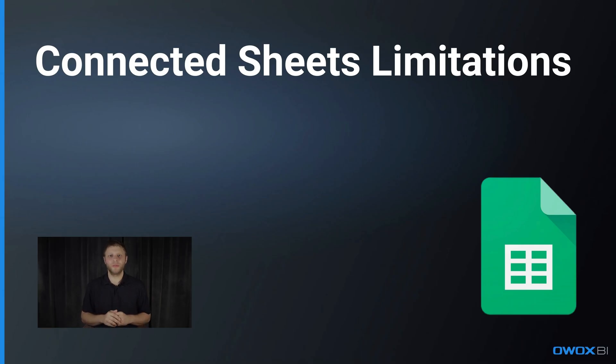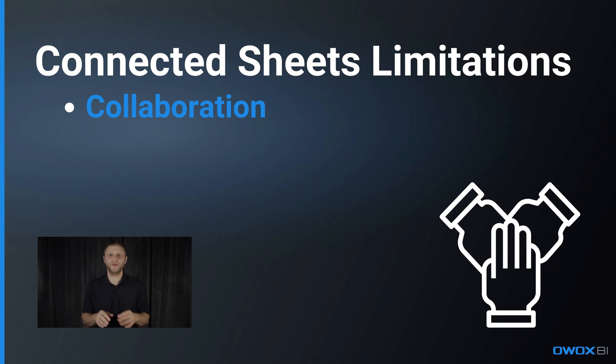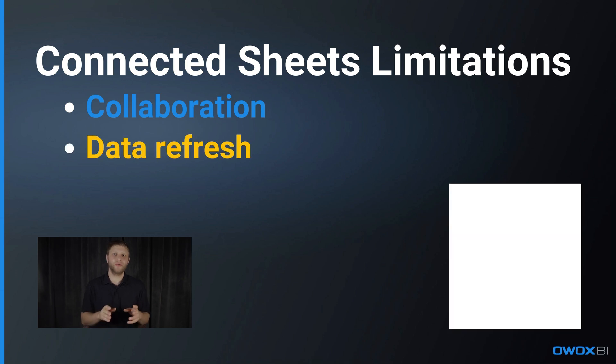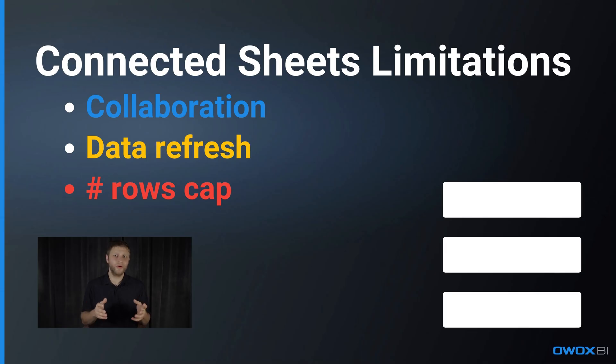But there are still a lot of limitations here. Collaboration features are pretty limited. Data refresh is hardly customizable — you can select from daily, weekly, or hourly. That's a good frequency, but if you need a report just twice a day, why do you need to run it 24 times a day and pay extra for data processing every time? However, the biggest limitation is that you cannot retrieve large files. There is a cap on the number of rows, which may restrict the analysis of larger datasets.